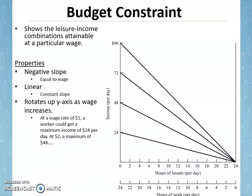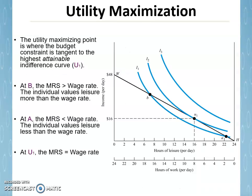The budget constraint is reality — the market is revealing to the worker what their value is. The worker takes that value and couples it with their indifference curve to make the labor supply decision, simultaneously making the leisure decision. Let's do that in this next slide.